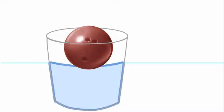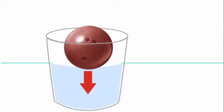The bowling ball and the water can't be in the same place at the same time. The water has to move out of the way to make room for the bowling ball. This is called displacement.